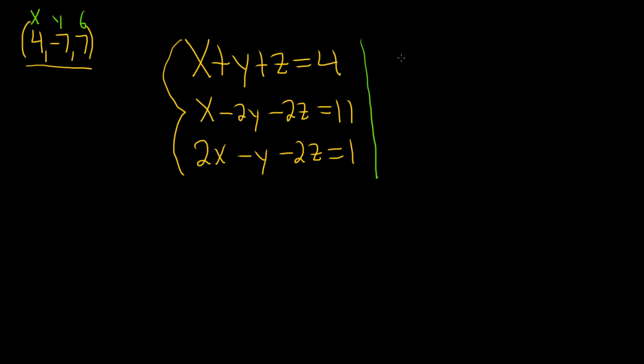Let's check the first one. So x is 4, y is minus 7, and then z is 7, and this should be equal to 4. So these cancel, so 4 is equal to 4. So the first one checks, right? We plug in 4 minus 7 plus 7. The 7s cancel, 4 equals 4, it checks.